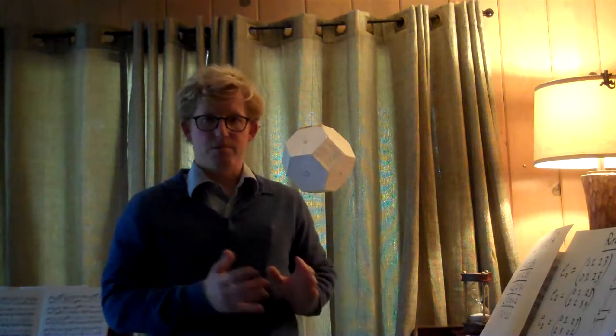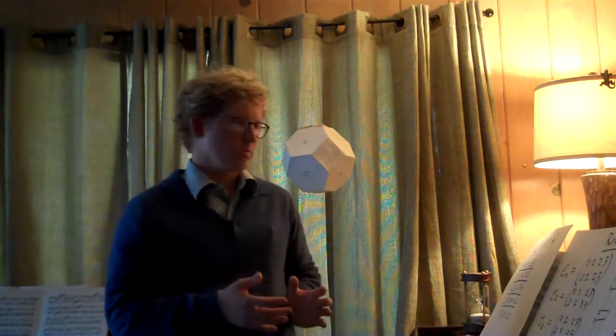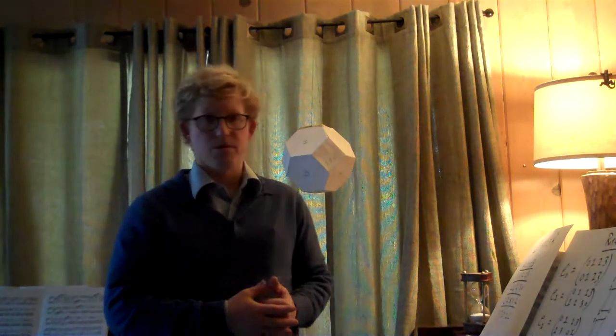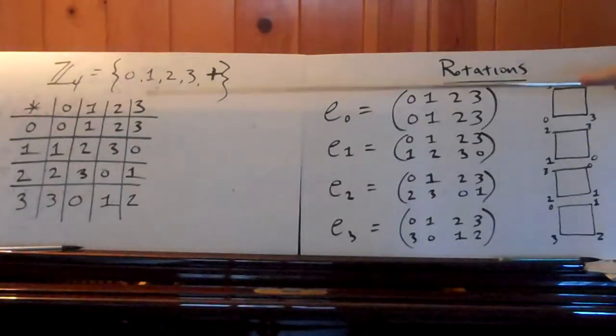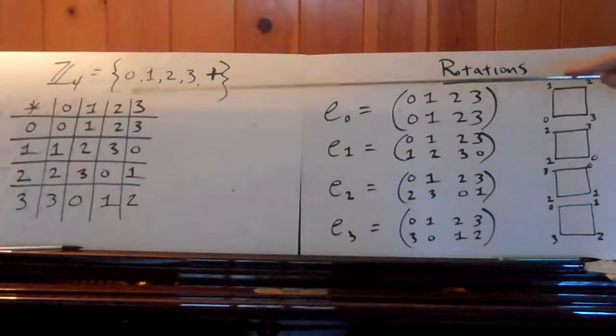So first let's take a look at the group itself in group theory and then we'll go from there. So here we see our group arranged in the Cayley table with the elements 0, 1, 2, and 3.